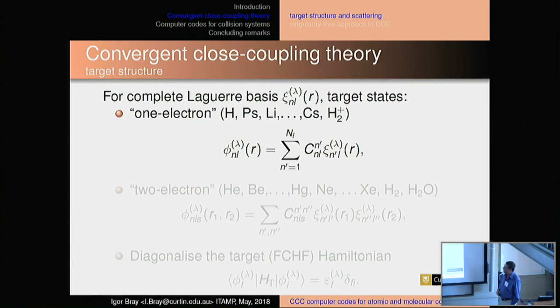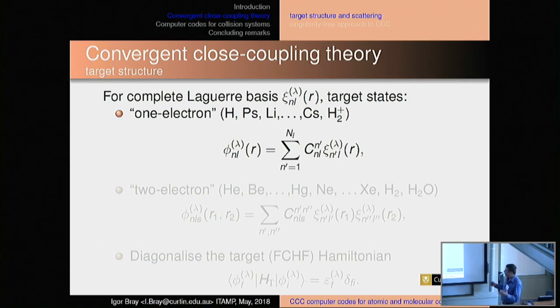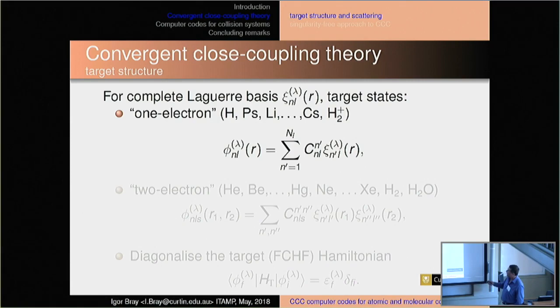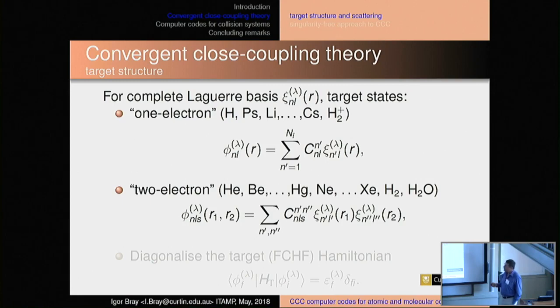Fundamentally, underneath it all is the Laguerre basis — it's a complete basis. Everything depends on that. So we know that if we increase our basis size, completeness and the size of the Hilbert subspace grows, and hopefully we'll reach convergence if we have the correct formulations. Our target states — one-electron target states: hydrogen, positronium, lithium, cesium, the H2+ molecule — are a linear combination of Laguerre basis functions.